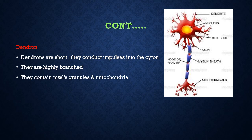Next we move on to the second part of Neuron, which is Dendron. The Dendron is very short and is a branch-like structure, and it is highly branched. It also contains Nissl granules and mitochondria. The main role of Dendron is it conducts impulse to the Cyton.